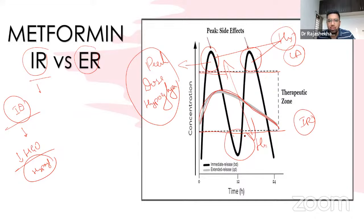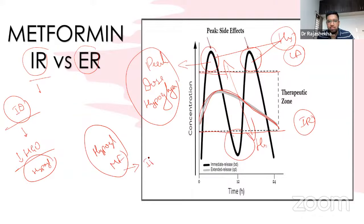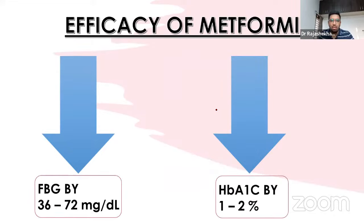If patients report hypoglycemia on metformin alone, check whether they are receiving the immediate release tablet — switch them to extended release. In terms of efficacy, metformin reduces fasting glucose by 4–8 mmol/L (36–78 mg/dL) and HbA1c by up to 1%.